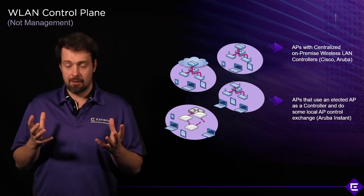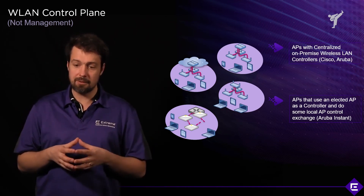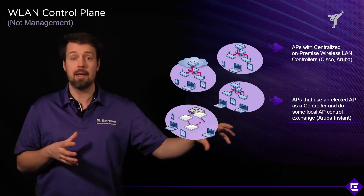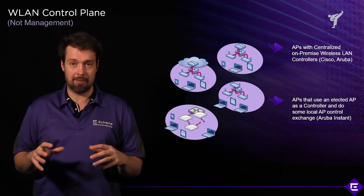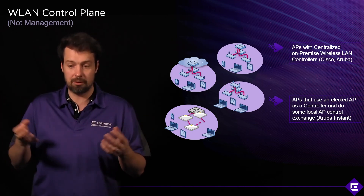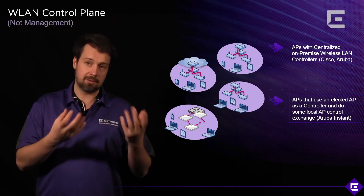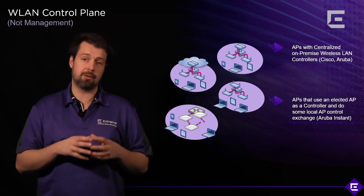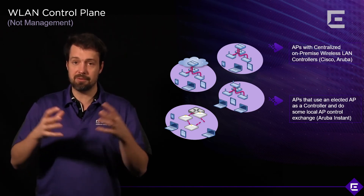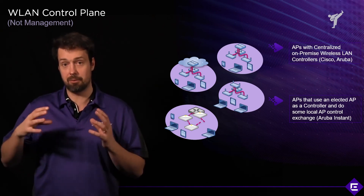Access points have taken on some control plane functions as well. This is where you see a mix: on-premise controllers handling control and data plane for the campus, while remote locations implement a remote control plane and central data plane on the AP itself — an AP-as-a-controller scenario. The same rules apply: that AP still becomes a bottleneck and can become overloaded with control plane information. That's why AP-as-controller solutions don't scale beyond a certain number of APs — usually around 64 access points per remote location.